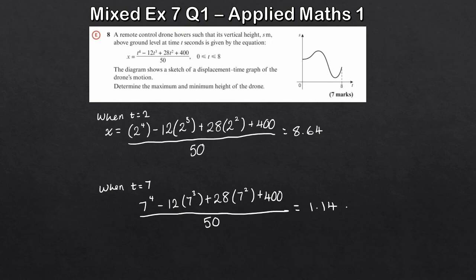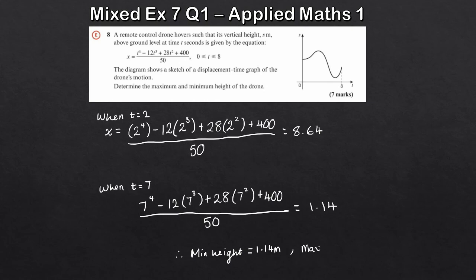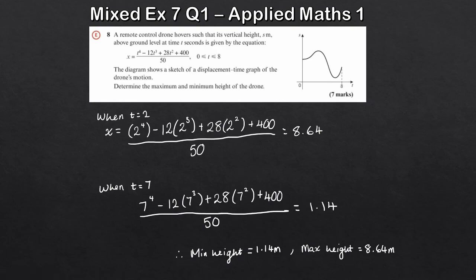So we have two heights: 8.64 meters and 1.14 meters. The minimum height is the smaller of the two, so the minimum height is 1.14 meters and the maximum height is 8.64 meters. For problem-solving questions, take them step by step — as soon as you see maximum or minimum of a function, immediately think calculus and differentiation.